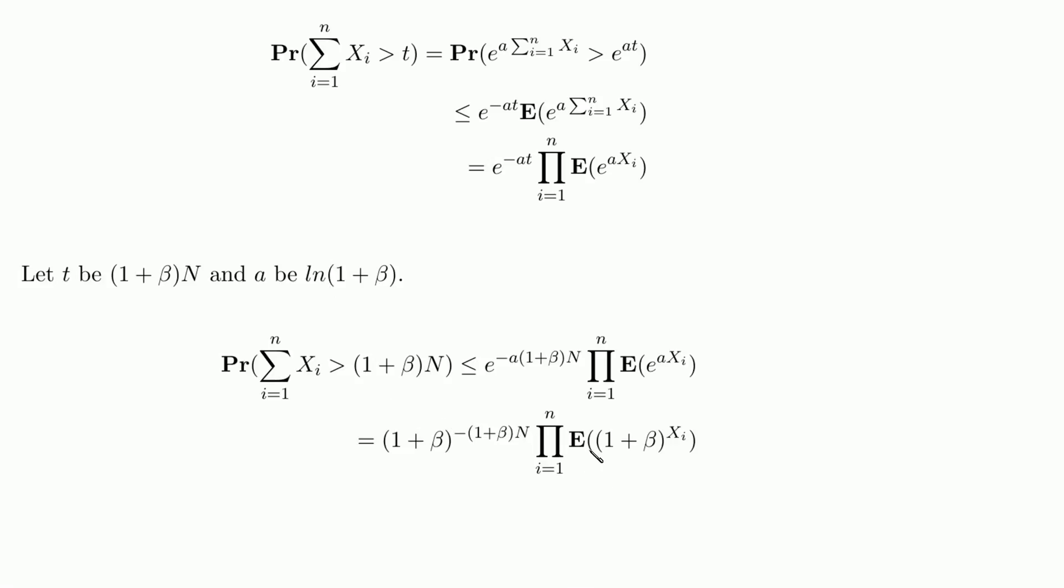The next thing we want to do is we want to simplify this term on the right here. And what we want to do is look at this. So basically, xi can be a 1 or a 0 in any given random experiment.